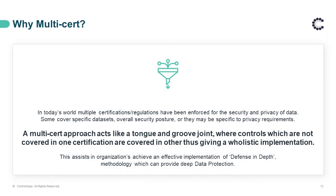They can mix and match these different types of controls across multiple projects, products, or processes, and together put across a holistic information security and privacy framework for the organization — which is what we call the data protection by design approach for the framework. As a matter of fact, ICO UK recommends this approach for effective data privacy regulation or GDPR implementation.